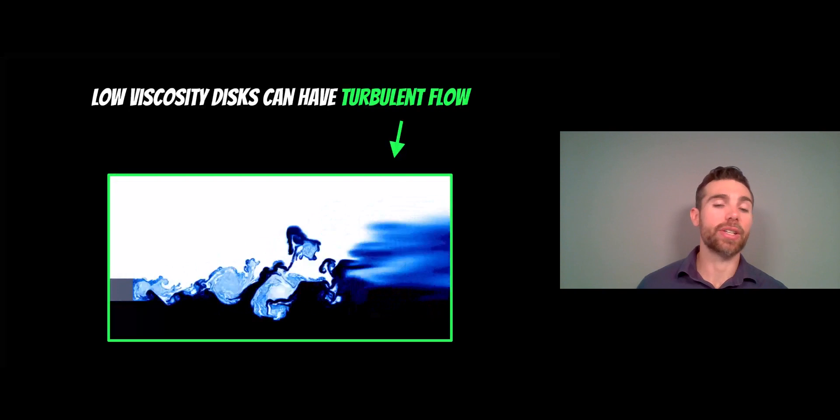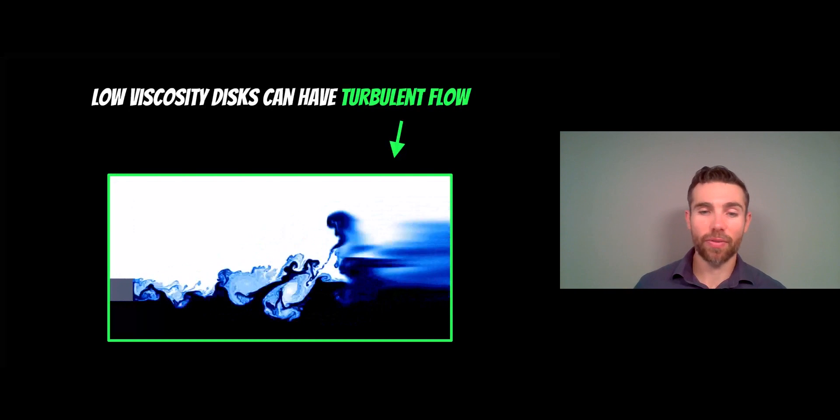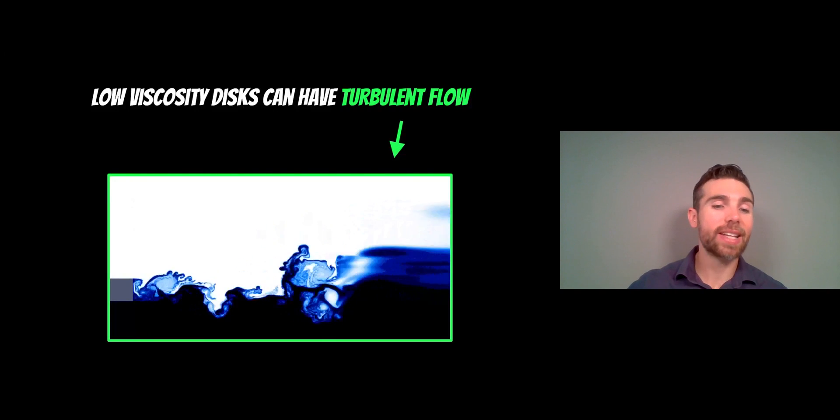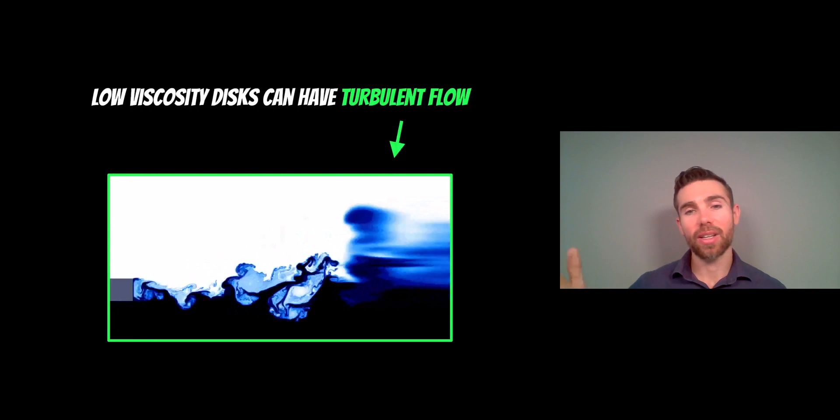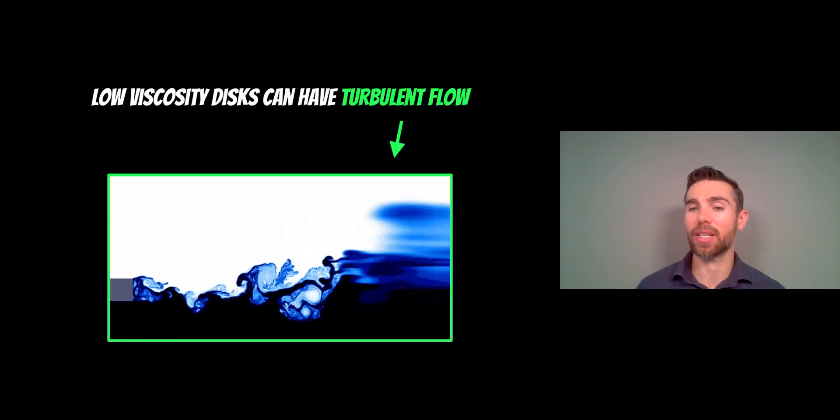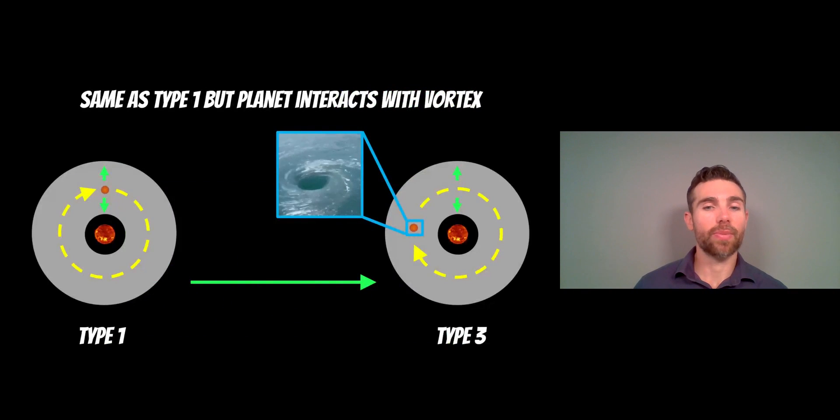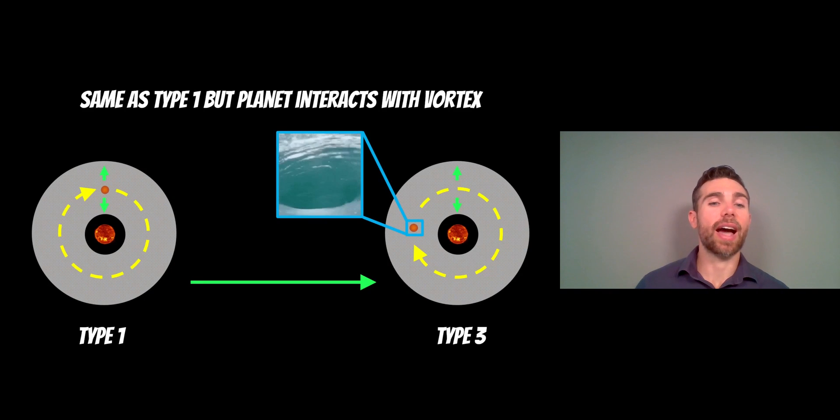Just imagine if you've got a planet in that sort of a flow, it's going to interact with those, and it will change the way that it moves. Its behavior, its migration rate is going to reflect that. As we mentioned before, Type 1 and Type 3 are pretty much the same. The difference is you've got a more turbulent flow in Type 3, and those planets are interacting with those vortices. That will then alter the way that it actually migrates.